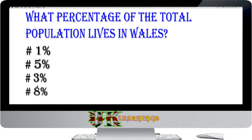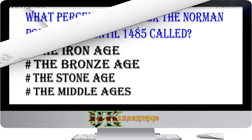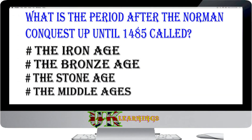What percentage of the total population lives in Wales? 1%, 5%, 3%, 8%. The answer is 5%. The UK population is very unequally distributed over the four parts of the UK. Wales makes up around 5%.